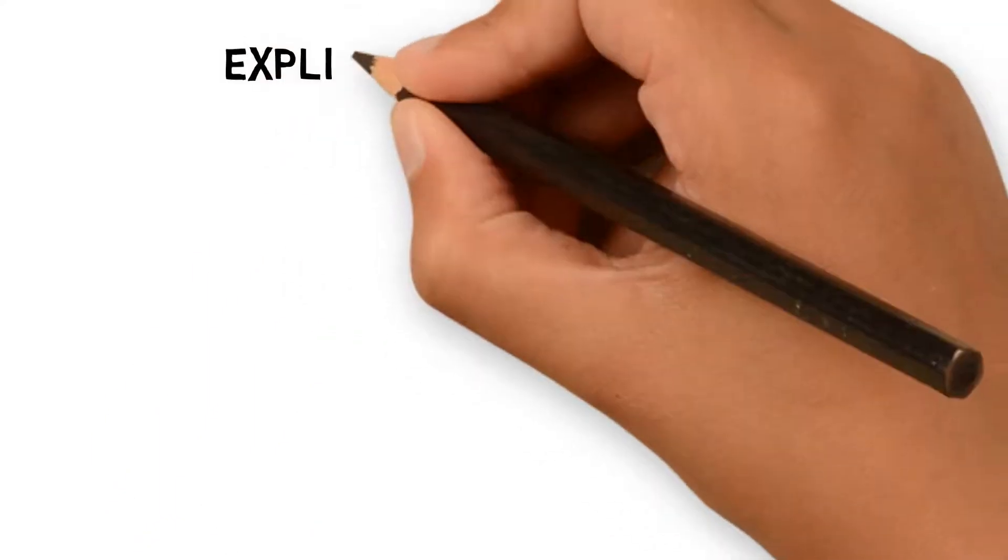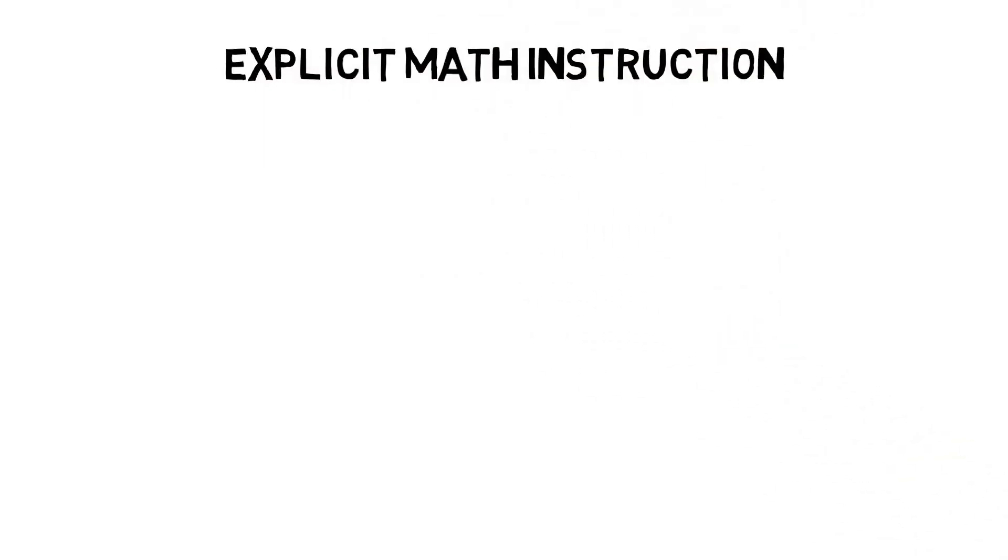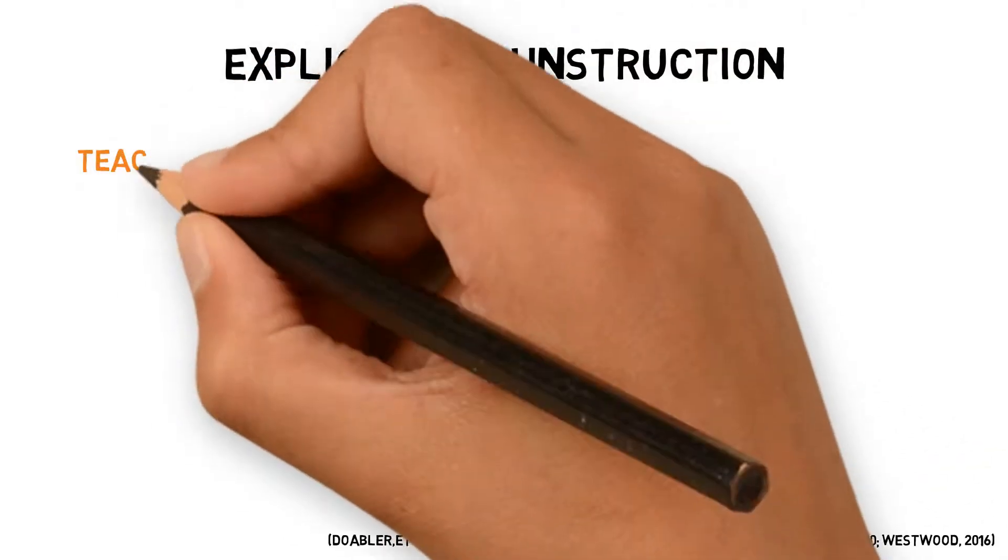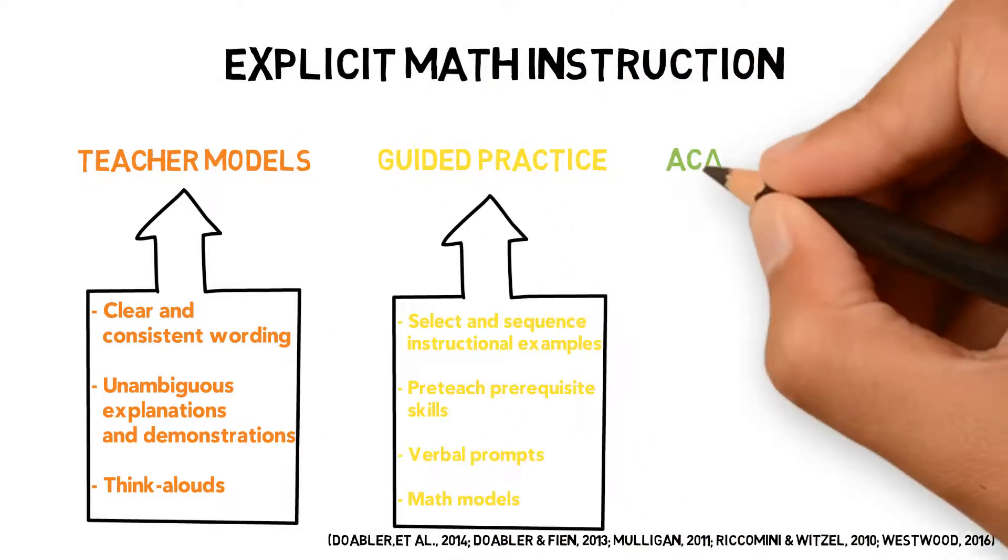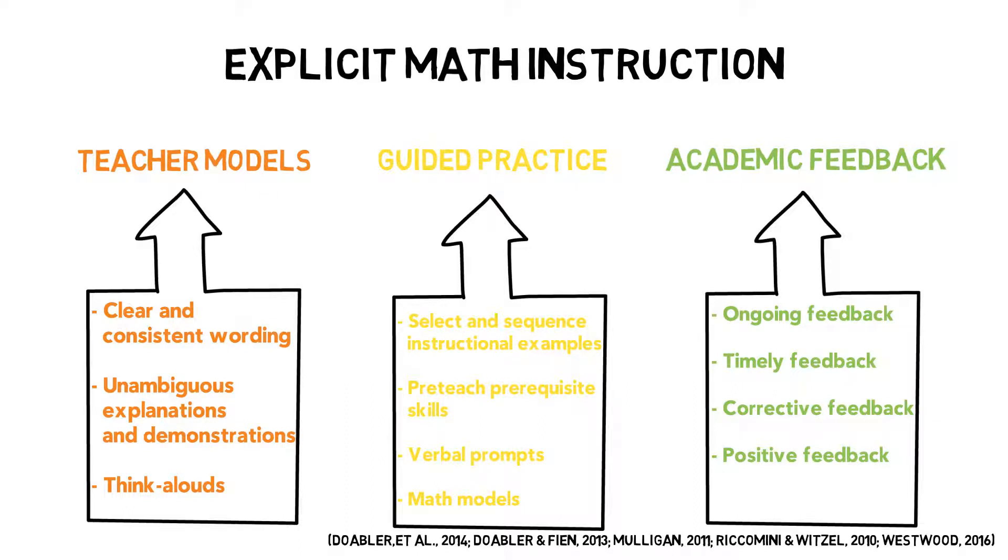At each tier, explicit instruction is systematically used to support students at risk for mathematical difficulties. This involves modeling of new concepts and skills, opportunities for guided practice, checking for understanding, providing descriptive academic feedback, and the provision of independent practice for students.